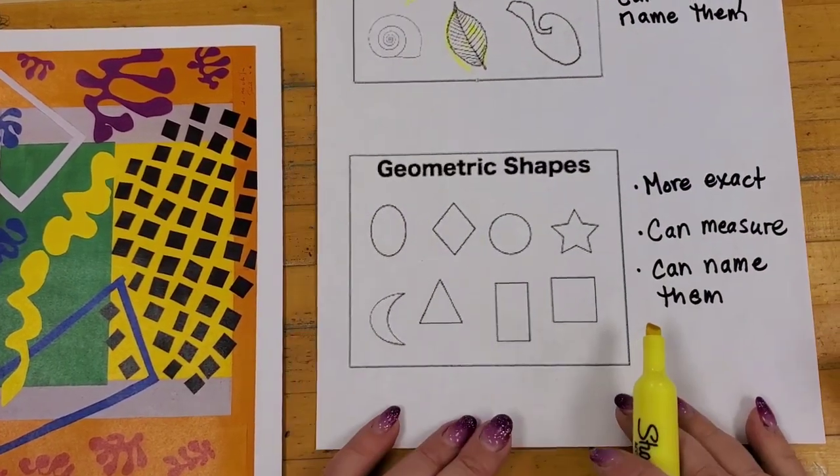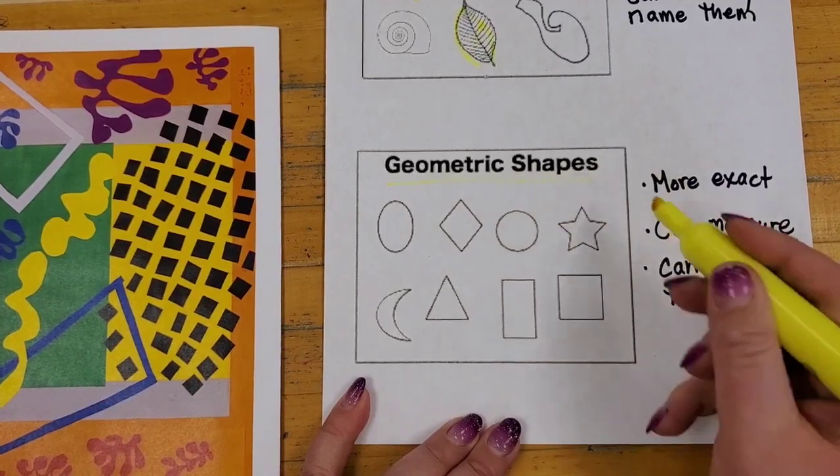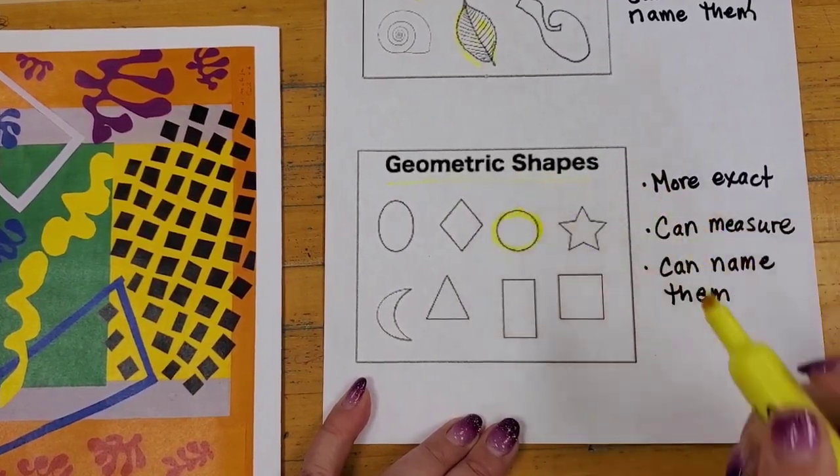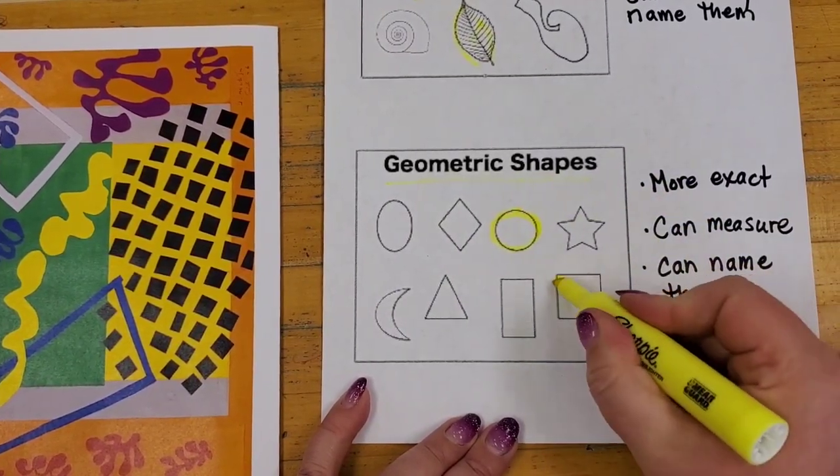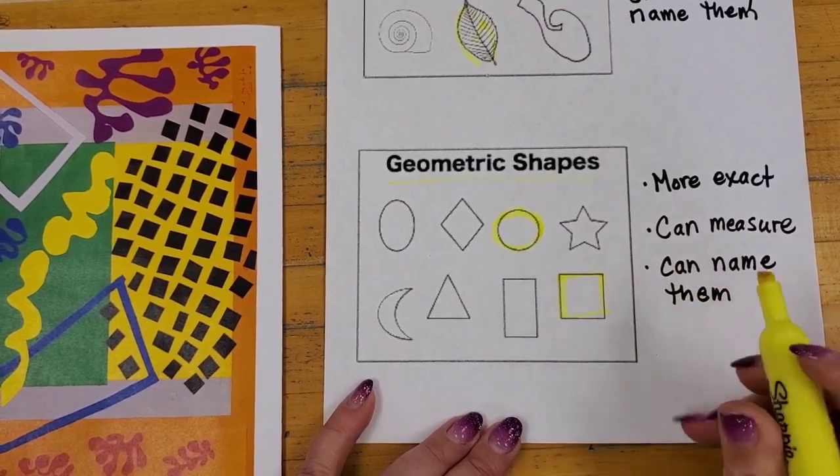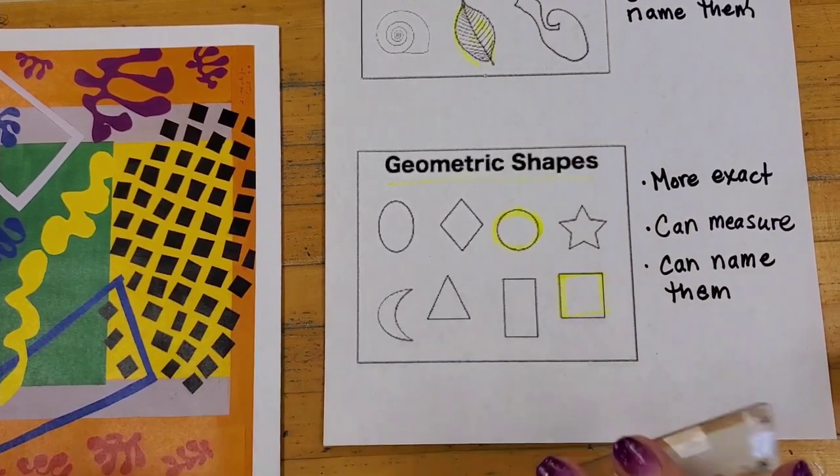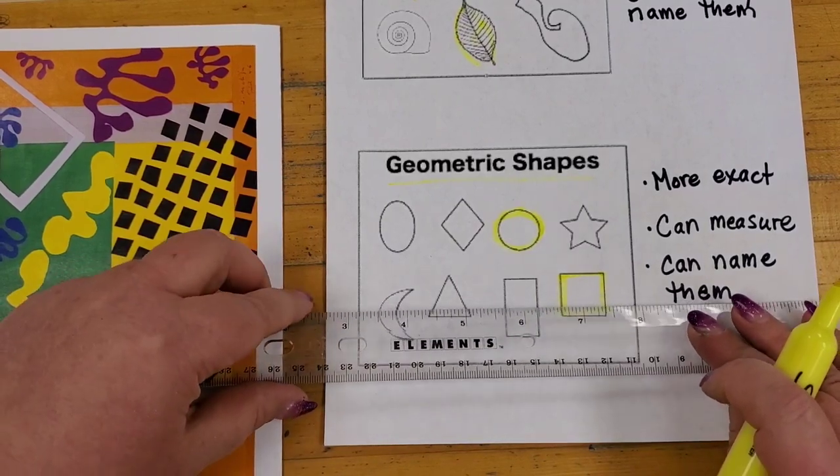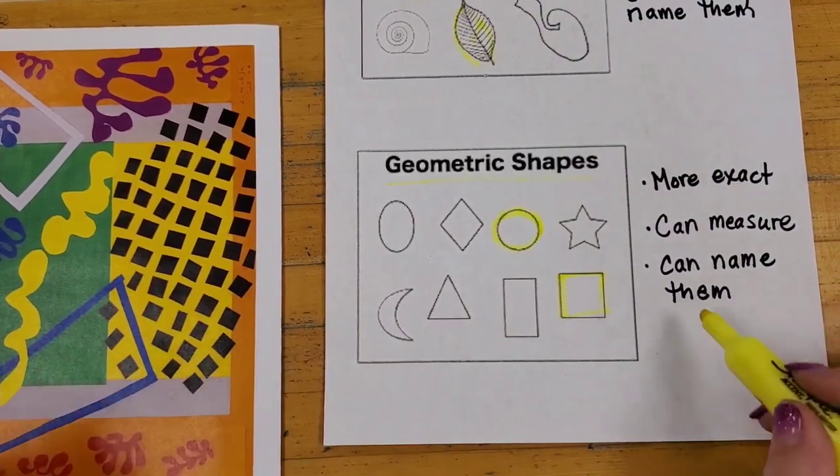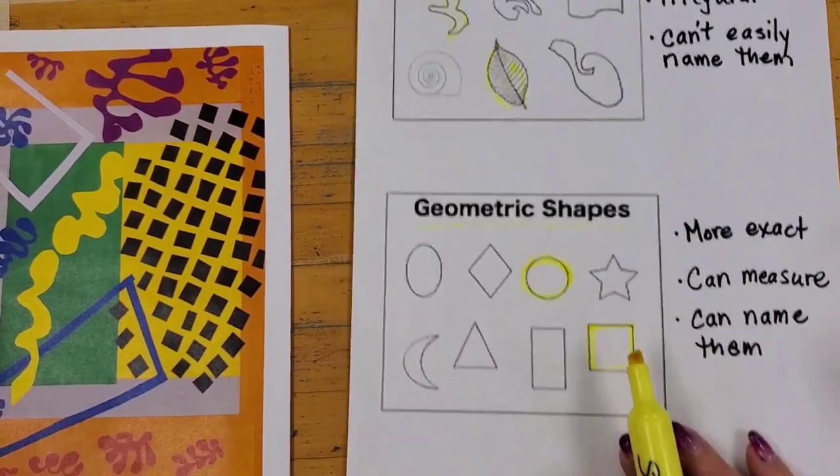So looking in this box, the geometric shapes, of course I can say this is a circle. Here is a square, right? They're easily named and I could measure them easily if I have my ruler here. That's another clue to tell me it's a geometric shape.